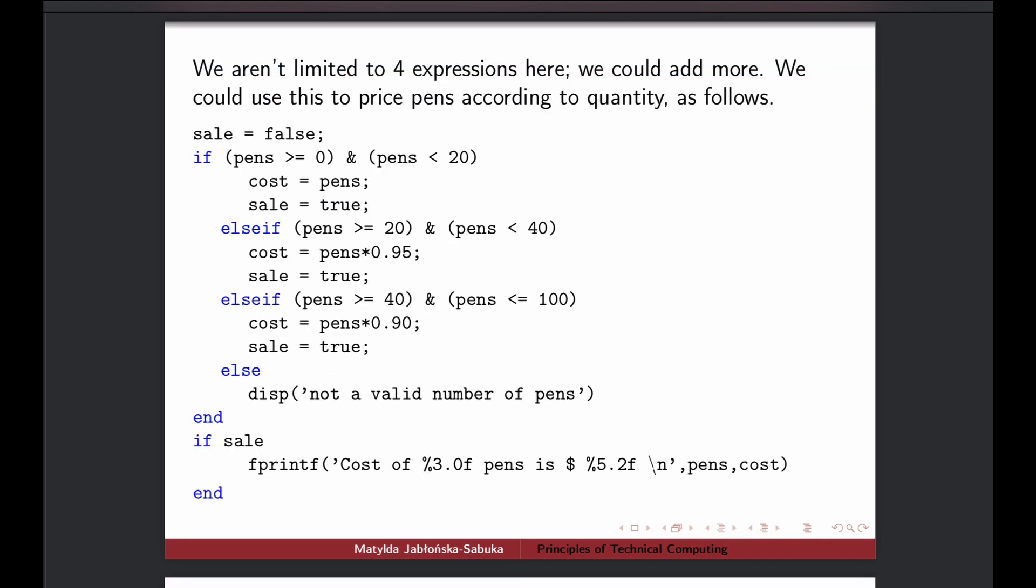So now, for an example, let's see that the cost of the pens would actually vary depending on how many pens are purchased. So now we have some total cost for the pens. If we buy anything between 0 and 19 inclusive, so less than 20, then we pay specific amounts. Otherwise, if it's between 20 and 40, then we get some discounts.